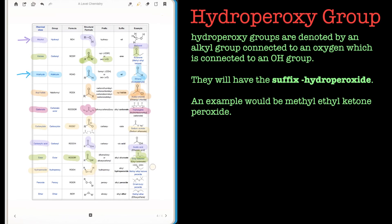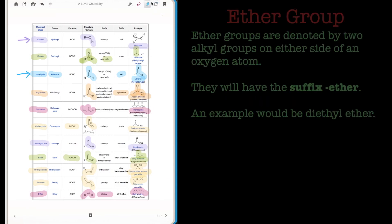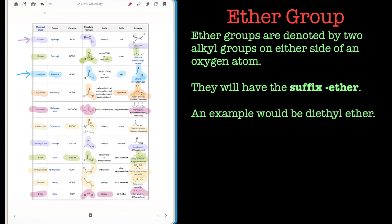Perhaps less common is the hydroperoxy functional group, and its cousin is the peroxy functional group. Both of these contain two oxygens. The last in the series is the ether group. The ether group is very common — as in diethyl ether, which is a very common solvent — and ether groups basically just have an oxygen connected to carbons, so it's the oxygen that denotes the functional group.